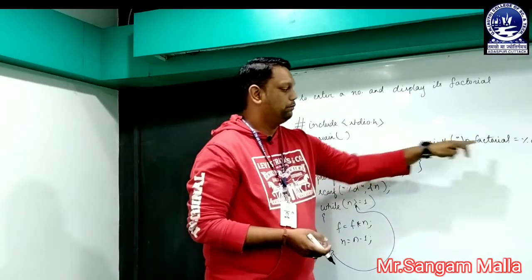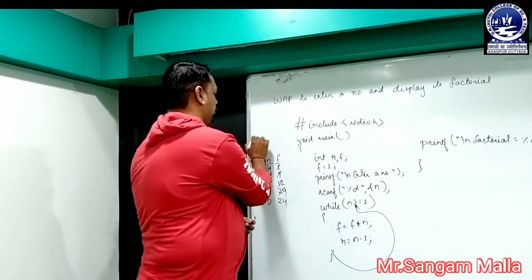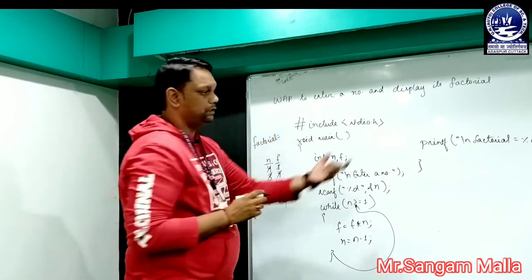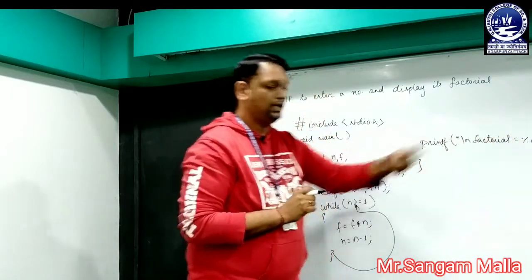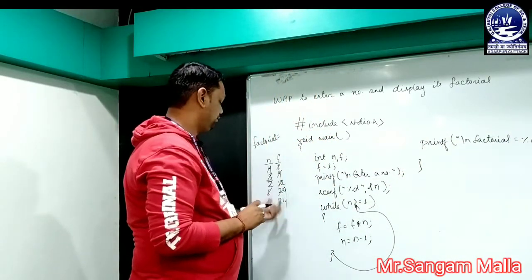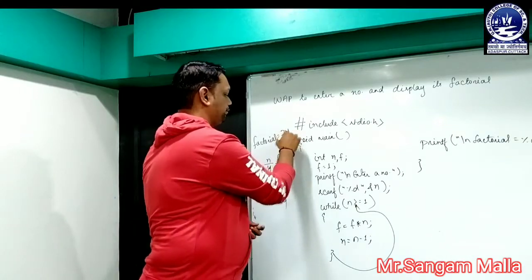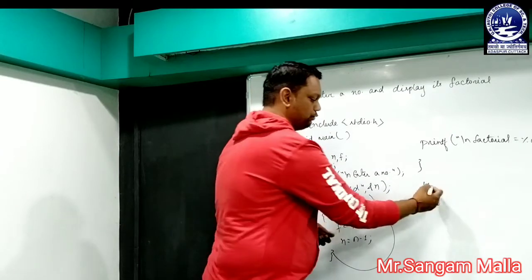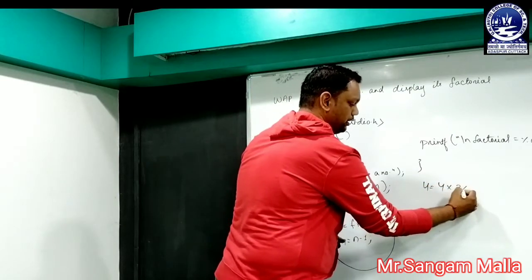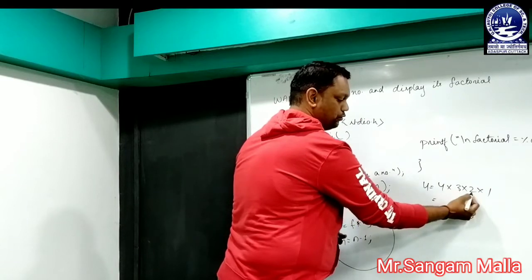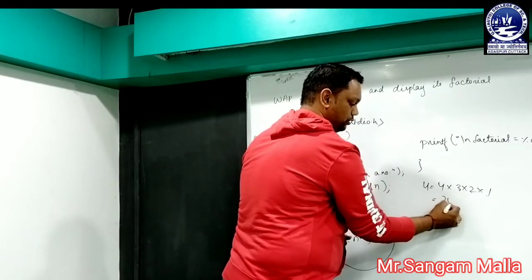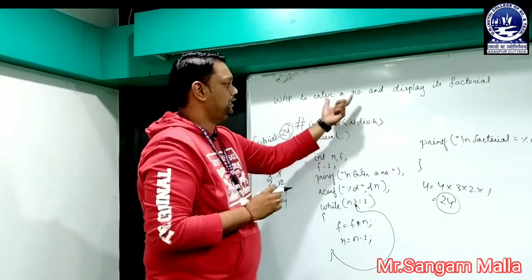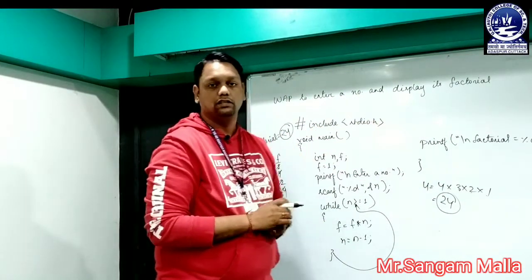Now it comes to printf and prints "factorial = 24" — the value of f is 24. You can see: for n = 4, the factorial is 4 * 3 * 2 * 1: 4*3=12, 12*2=24, 24*1=24. We have got the correct result. This is the program for entering a number and displaying its factorial.